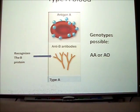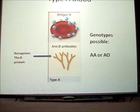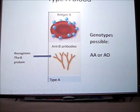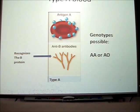Please fill in anti-B antibodies for blood type A. If you have blood type A, there are two possible genotypes: AA or AO.